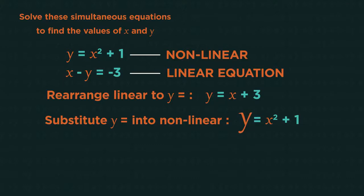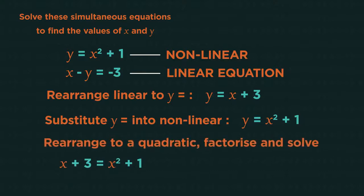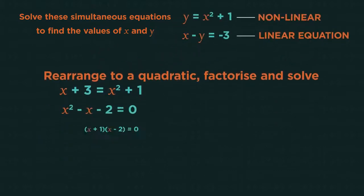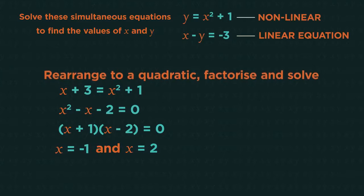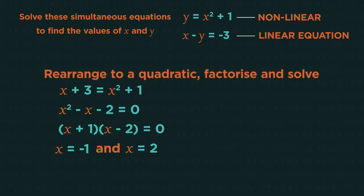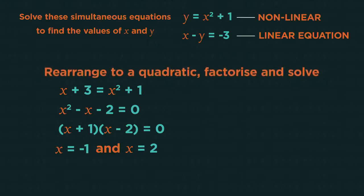Rearrange this to get a quadratic, then factorize and solve it to get x equals -1 and x equals 2. Because we have two x values we need two y values.